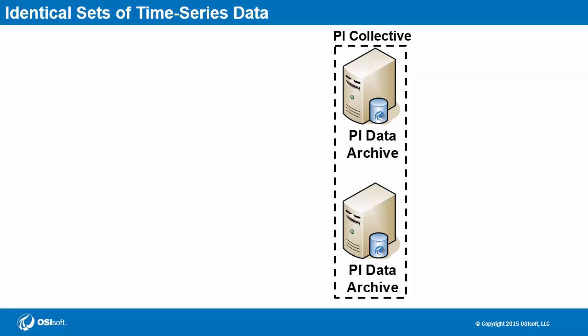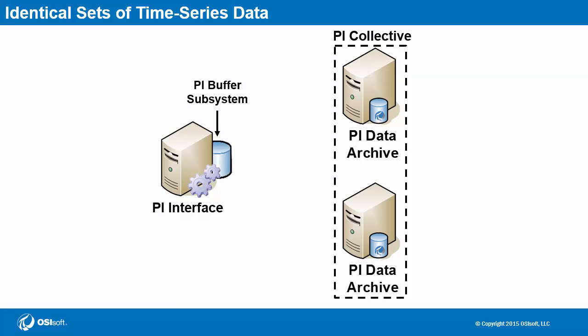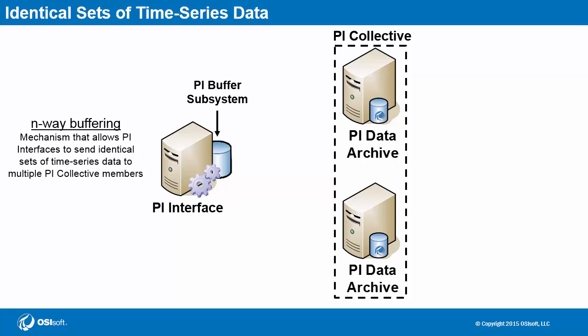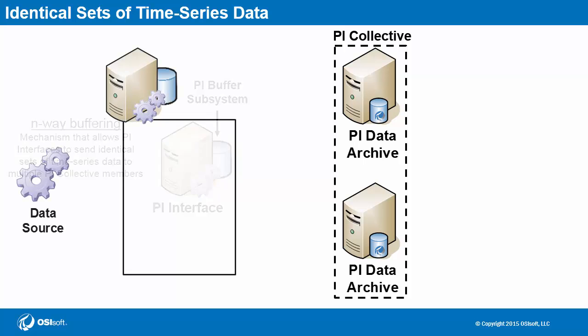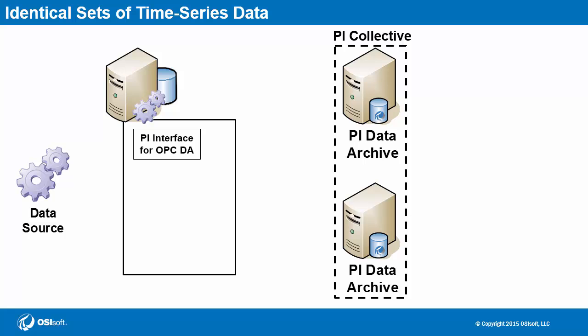Now, let's take a step back and discuss how PI collective members contain identical sets of the same time series data. This wouldn't be possible without the PI interface node, so let's bring it into the picture. Along with the one or more PI interfaces running on this machine, there is another PI system component called the PI buffer subsystem that must also be running. Specifically, the PI buffer subsystem has a feature called n-way buffering that creates and sends copies of time series data. Let's say this machine is running just one interface, namely the PI interface for OPCDA. We'll configure the PI buffer subsystem on the same machine as well. Here is a data value — a timestamp and a value — produced by the data source.